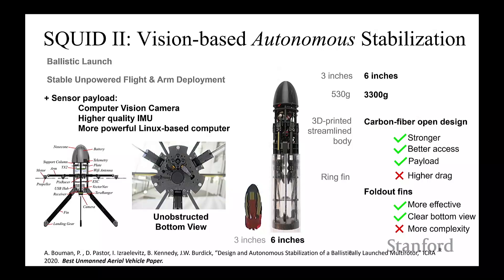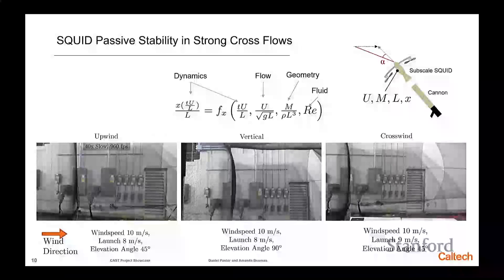So the next thing we started looking at is can we autonomously stabilize these vehicles? This is a larger one, we call it SQUID-2, or as my students call it, the Kraken, because it weighs 3 kilograms. It can really hurt you at 70 miles an hour if you're not careful. This one has onboard autonomy, so there's onboard LIDARs and cameras and computing. We found out that these drones experience forces over 100 Gs during the launch process. So you can imagine if you're shot out of a cannon at 100 Gs, all your sensors are going to be completely kaflooey.